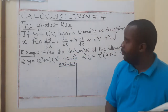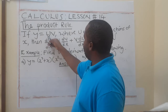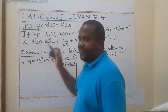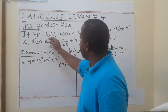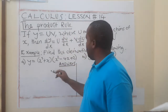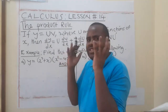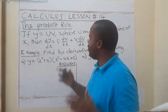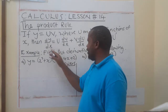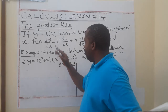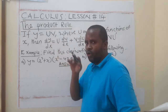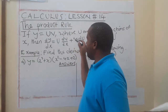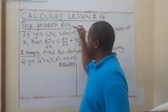If you have a function y = u times v, where u and v are functions, so you have got two functions — you are multiplying function u by function v — how do you find the derivative, the differential coefficient, or the gradient of the function? You are going to say dy/dx equals u, you maintain your u but differentiate v. Plus, you do the opposite: you keep your v and differentiate u.